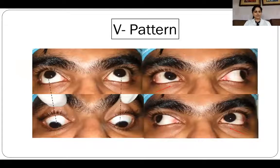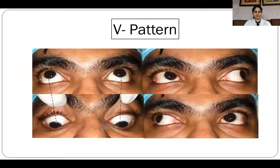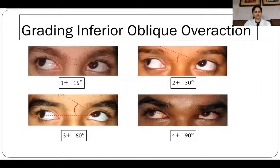Horizontal deviations are commonly associated with A and V patterns. In V pattern exotropia, the divergence is more in upgaze and less in downgaze. This is because of inferior oblique overaction. V pattern is considered significant if there is a difference of 15 prism diopters between upgaze and downgaze measurements. The inferior oblique overaction manifests as over-elevation of the eye in adduction and is seen in 70% of patients with exotropia.